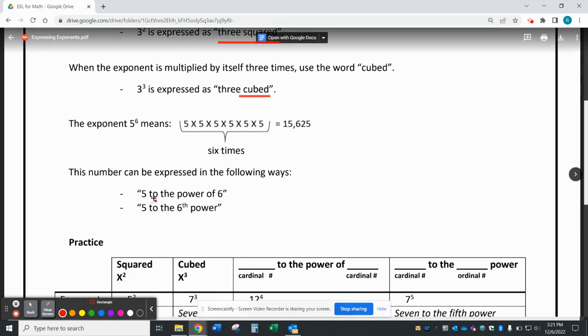In a previous video, I discussed the difference between a cardinal number and an ordinal number. In this case, the 5 is a cardinal number, and 6 is an ordinal number with the th after it.